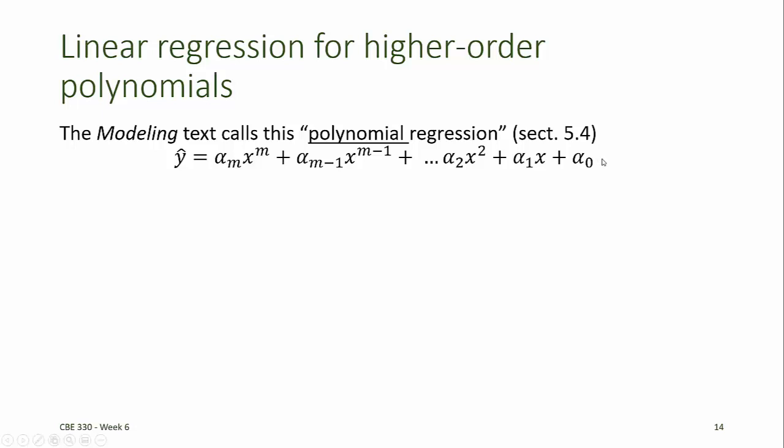Alpha 0 for the x to the 0 term, alpha 1 for the x term, alpha 2 for the x squared term, and so on through alpha m for the x to the m term. The sum of the squared residuals is the sum of the data at each point minus the model squared.